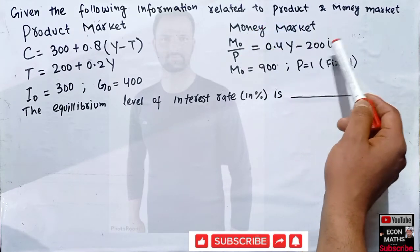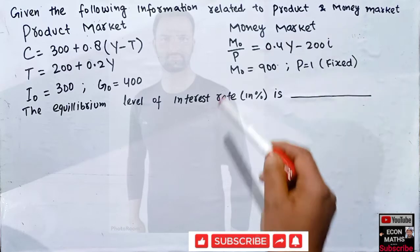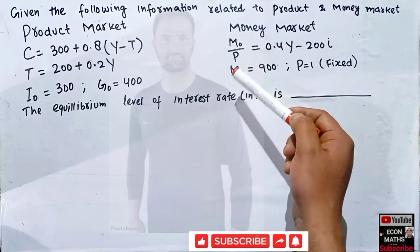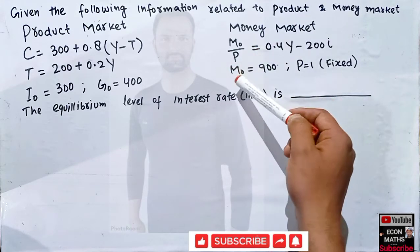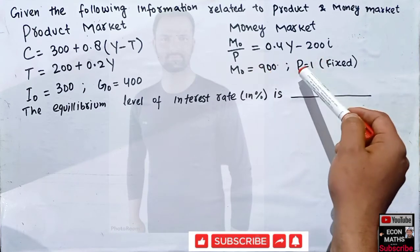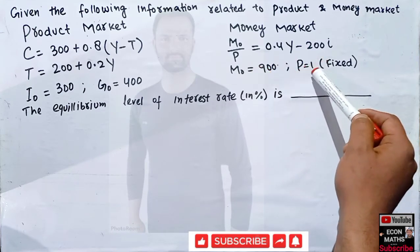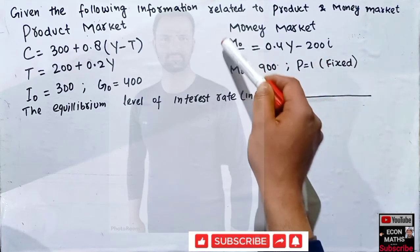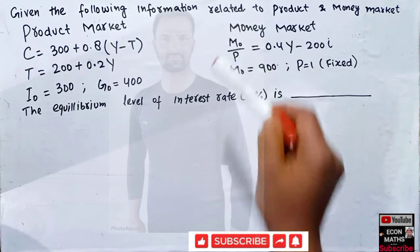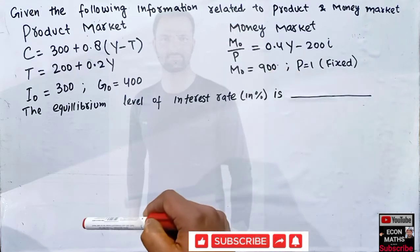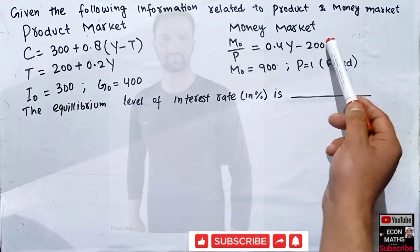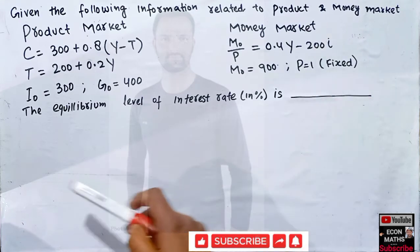In the money market, M₀/P = 0.4Y - 200i, where M₀ denotes the nominal money supply which is 900, and the price level P is fixed at 1, so M₀/P denotes real money supply. i is the interest rate.